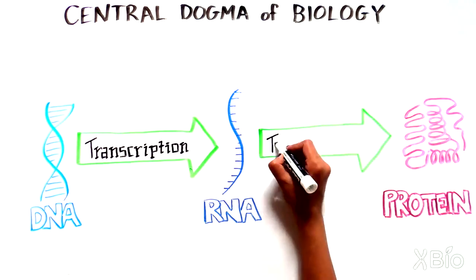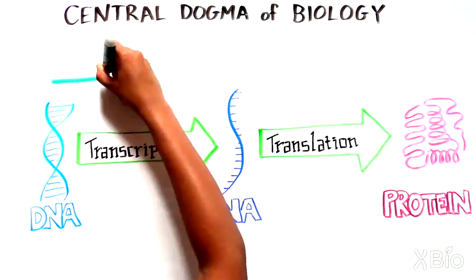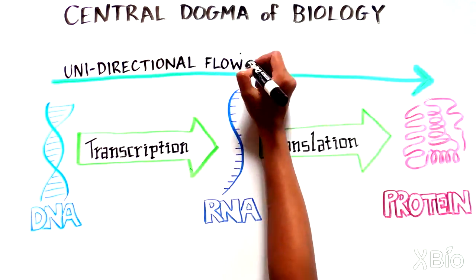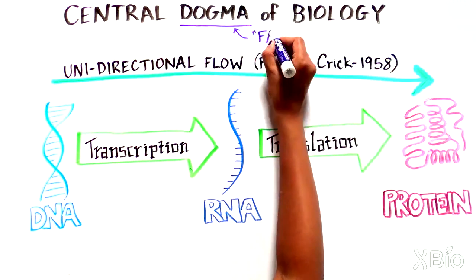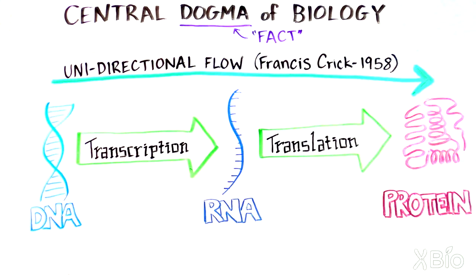The idea that the flow of information is unidirectional was put forth by Francis Crick in 1958. The very word dogma means that this is the truth, a fact.